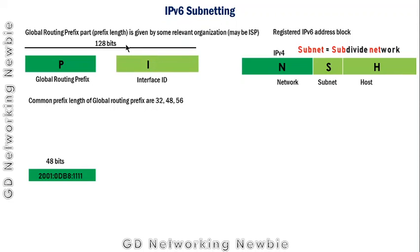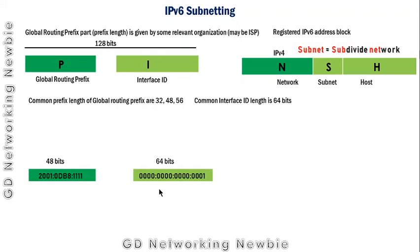We also have the interface ID, which is the part assigned to an individual router interface or a specific computer, laptop, or tablet. The common interface ID length is 64 bits. The important field we are discussing today is the subnet field — this is the part we are interested in, where we will perform subnetting, similar to IPv4 but without a subnet mask. We now need to find out the number of bits used in the subnet field.